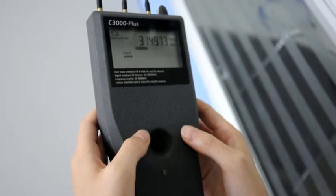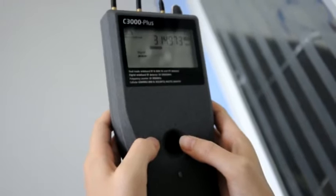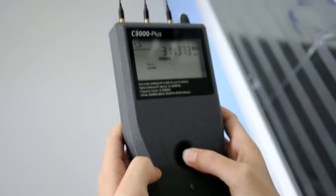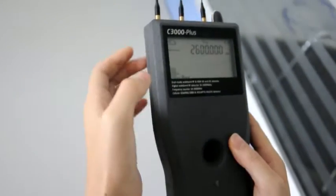And then the second one is cell phone signal detecting. And you can long press this button to switch it. Okay, as you can see, under this mode,